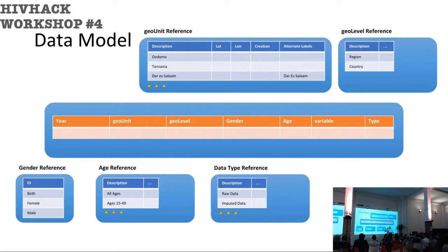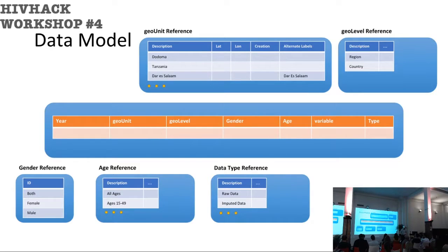There's also a data type reference. When scientists look at data, they want to know where it came from. Did you find it in a report? Did you calculate it? Did you apply some fancy algorithm to impute missing data? If they see a figure like 7.5, they want to know whether you found it in documentation or calculated it yourself. Some of you may recognize this as a star schema and data warehousing perspective — a fact table in the middle with some dimensions floating around it.